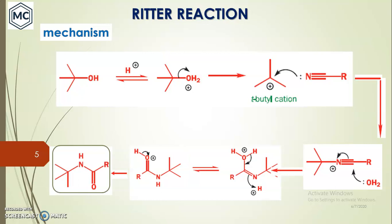So this is the general proposed mechanism of the Ritter reaction. You are starting with an alcohol and finally you get an amide — an N-alkyl amide.